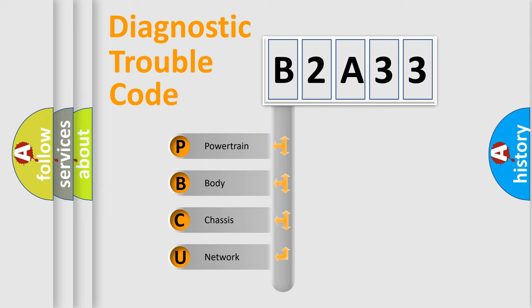We divide the electric system of an automobile into four basic units: Powertrain, Body, Chassis, and Network. This distribution is defined in the first character of the code.